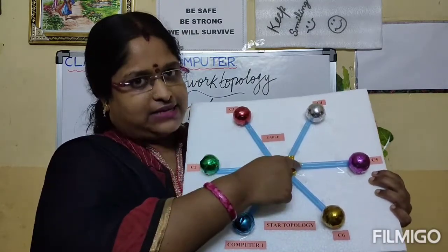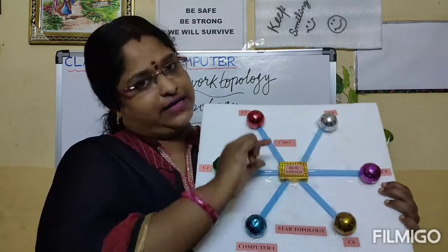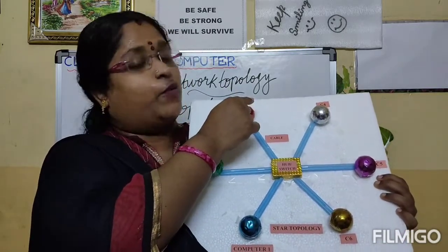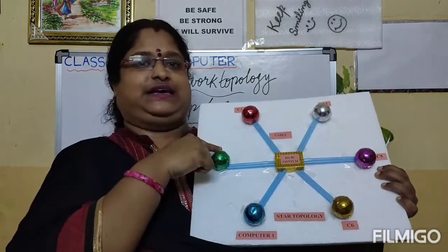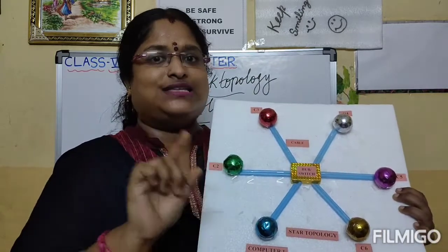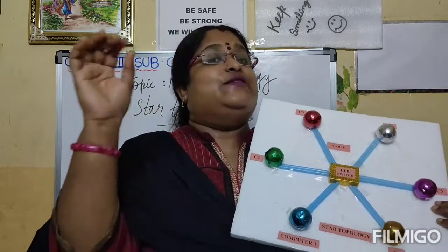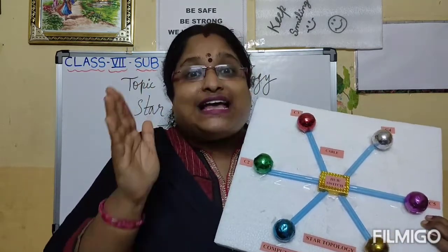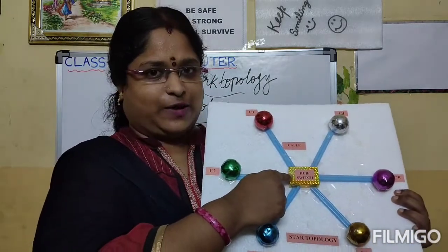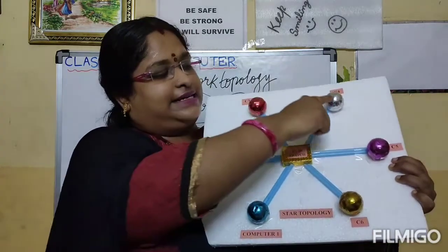You can use a hub or a switch as a central controlling device. There is a difference between a hub and a switch. If you are using a hub, it receives the data packet from one PC and transfers it to all PCs. This kind of data transmission is called broadcasting. For example, news channels broadcast the news to all of us.